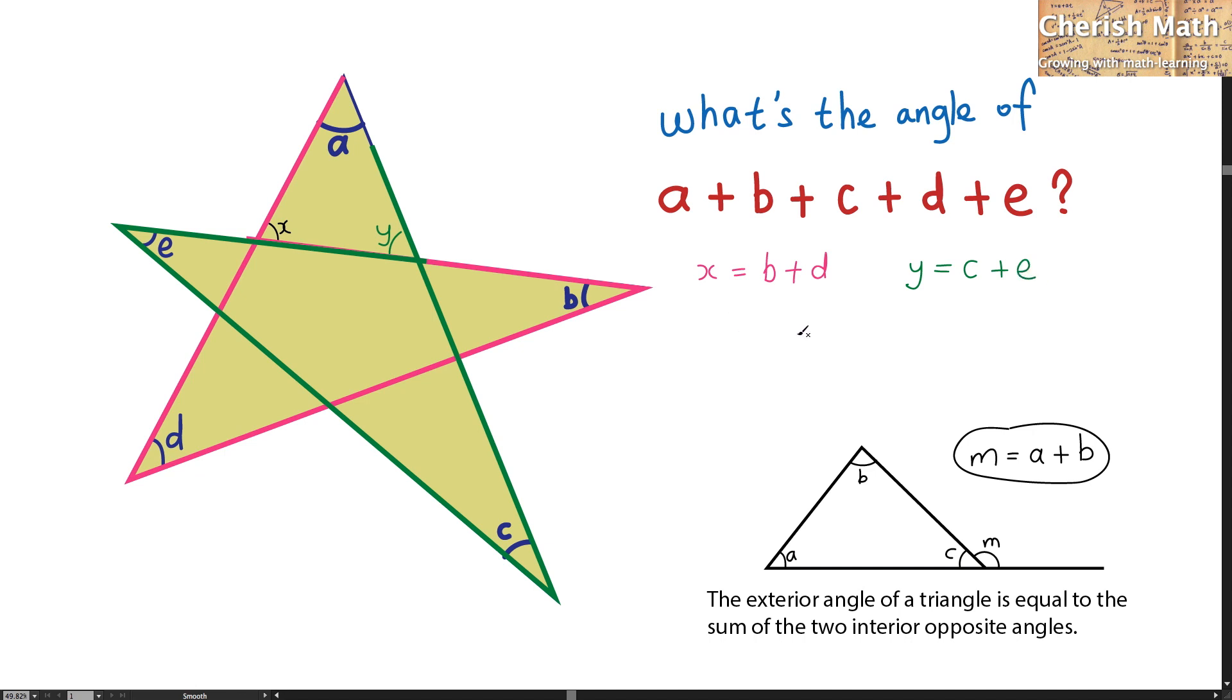We are going to use these two equations that I've got here to solve the problem. Look at the triangle at the top part of the star. We know that the sum of angle A and X and Y is going to produce 180 degrees.